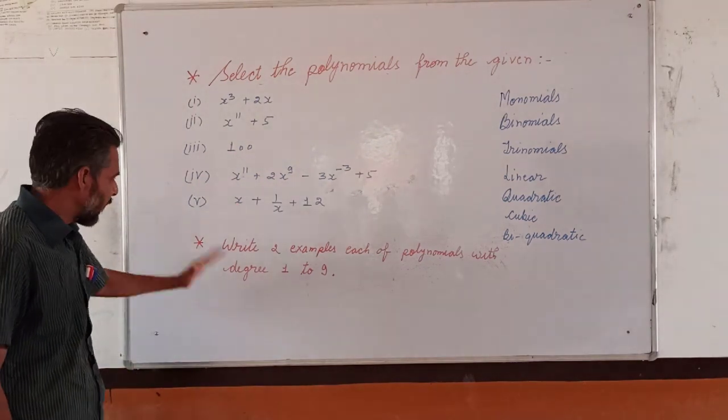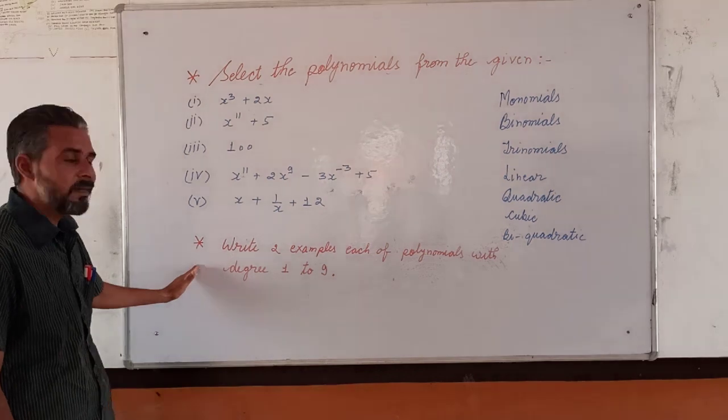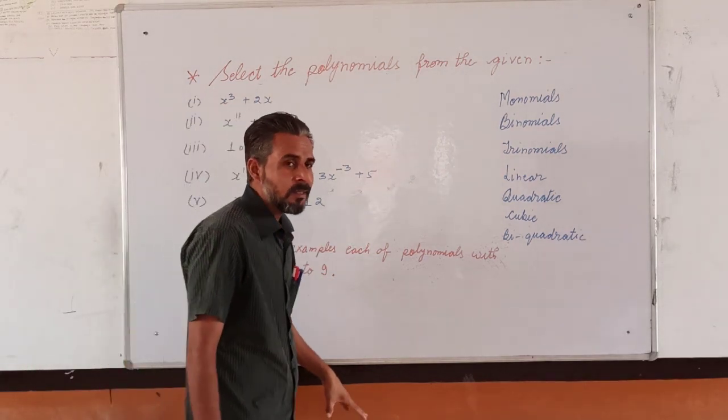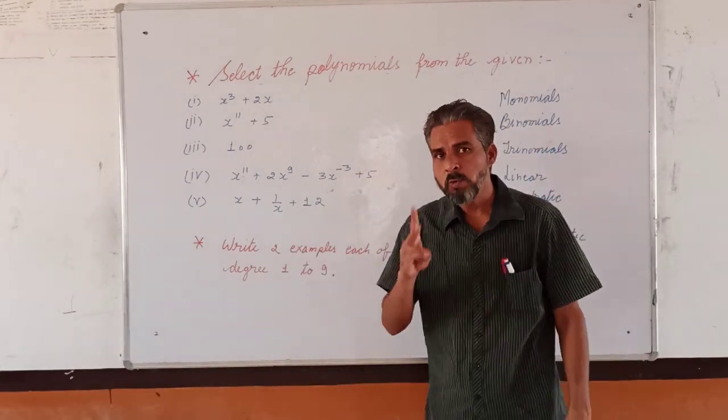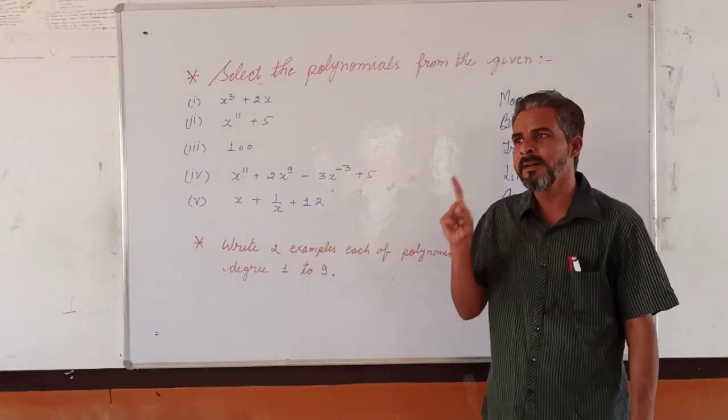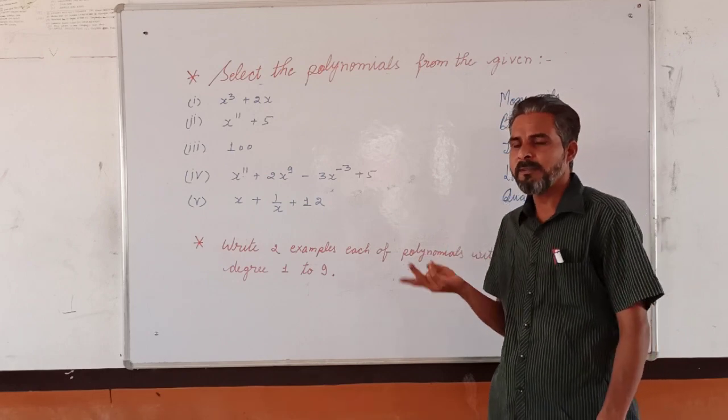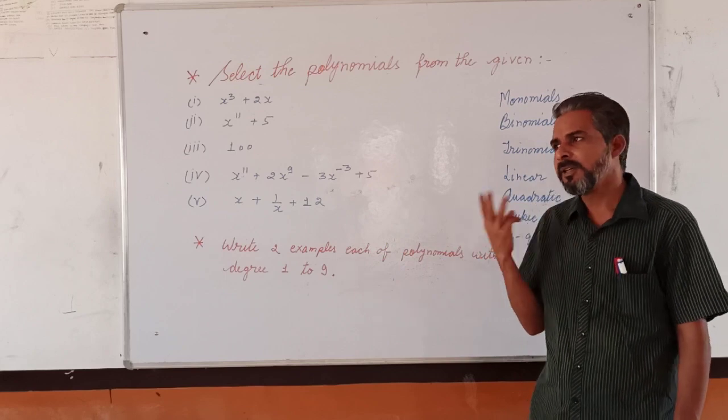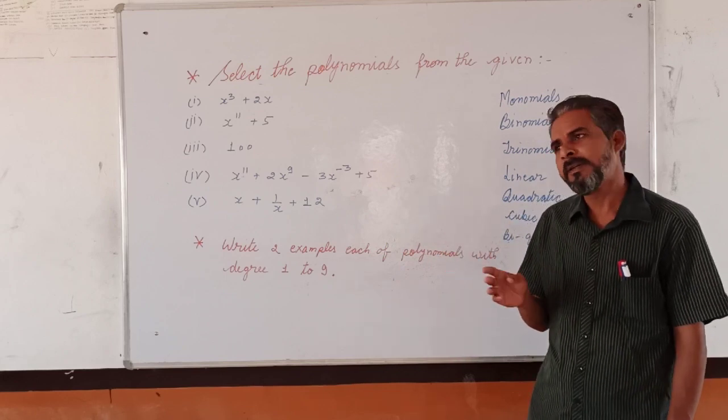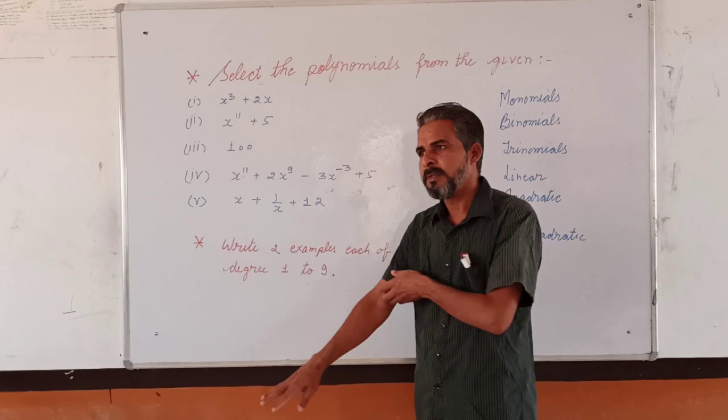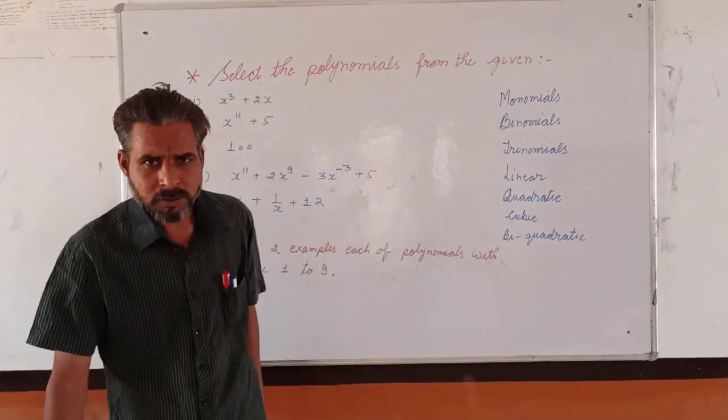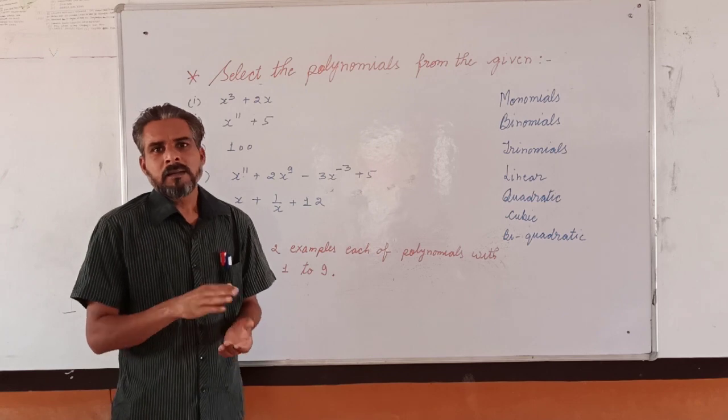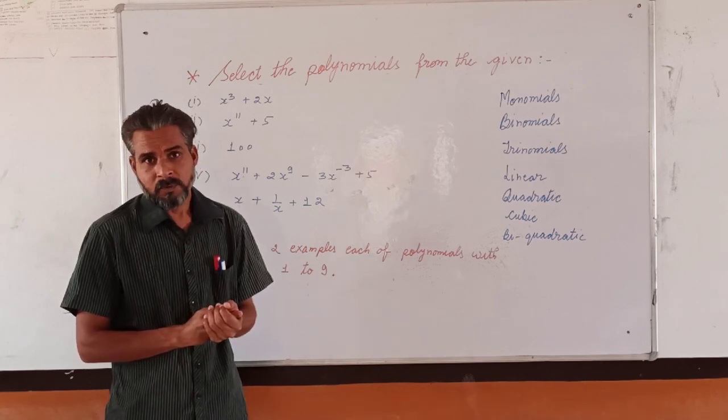The second question is that you are supposed to write two examples each of the polynomials with degree 1 to 9. Means two examples of the polynomials with degree 1, two examples of polynomial with degree 2, up to 9. With degree 3 also you are supposed to write two examples, with degree 4 also you are supposed to write two examples. After writing these examples, you are supposed to click the photos and send on the WhatsApp number, the school WhatsApp number.